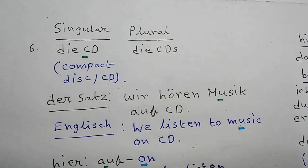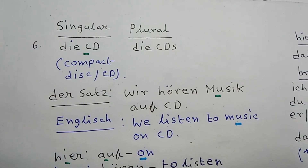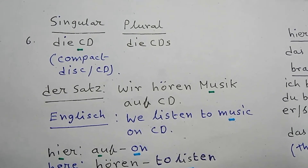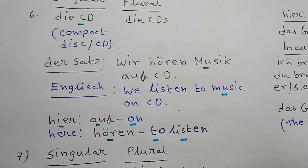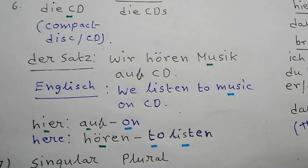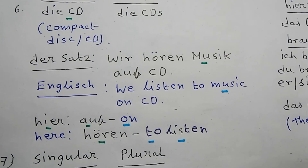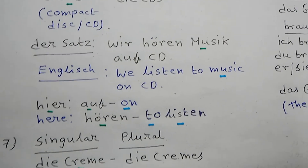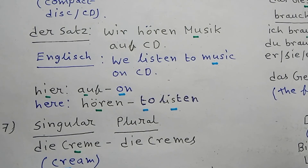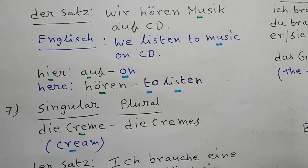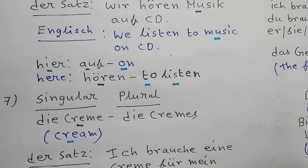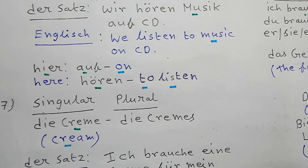Number six: Die CD, plural die CDs. English meaning: compact disk or CD. Now German sentence: Wir hören Musik auf CD. English: We listen to music on CD. Here 'auf' is a preposition meaning 'on', and 'hören' is the verb 'to listen'.